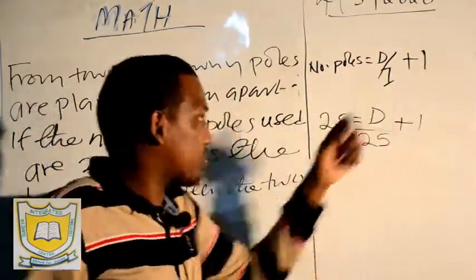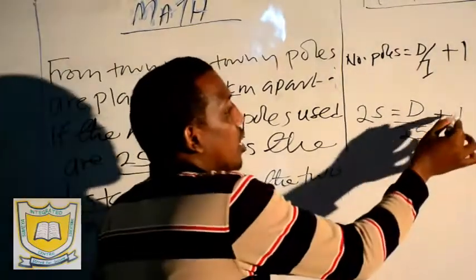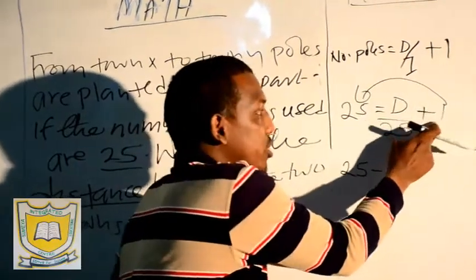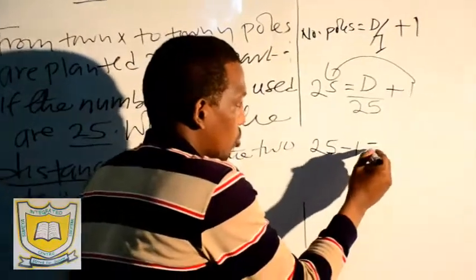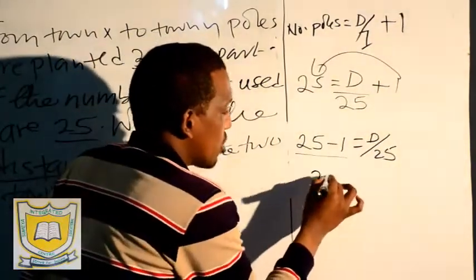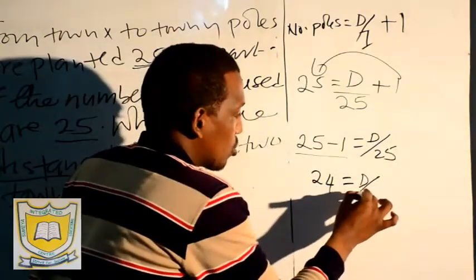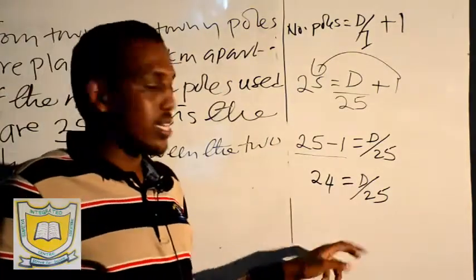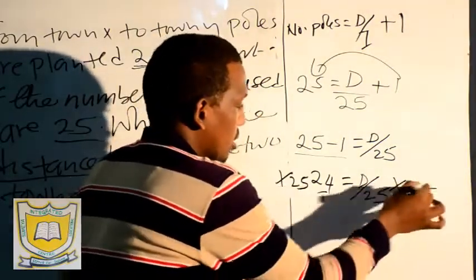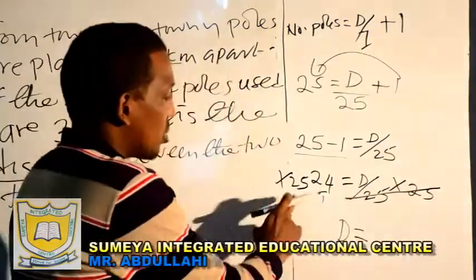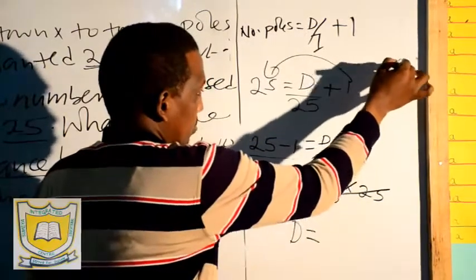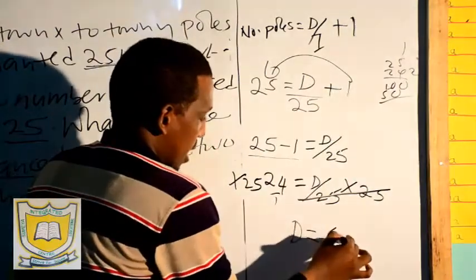We want to get the distance now. We collect like terms. The 1 will move to the other side — it is plus, so when it crosses it becomes minus. So 25 minus 1 equals D over 25. That gives us 24 equals D over 25. We multiply both sides by 25, so D equals 25 times 24, which gives us 600 km. That is the distance.